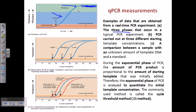You need to understand these phases. Another important thing is that during the exponential phase of PCR, the amount of PCR product is proportional to the amount of starting template. This is a very important assumption. Therefore, the exponential phase of PCR is analyzed to quantitate the initial template concentration.